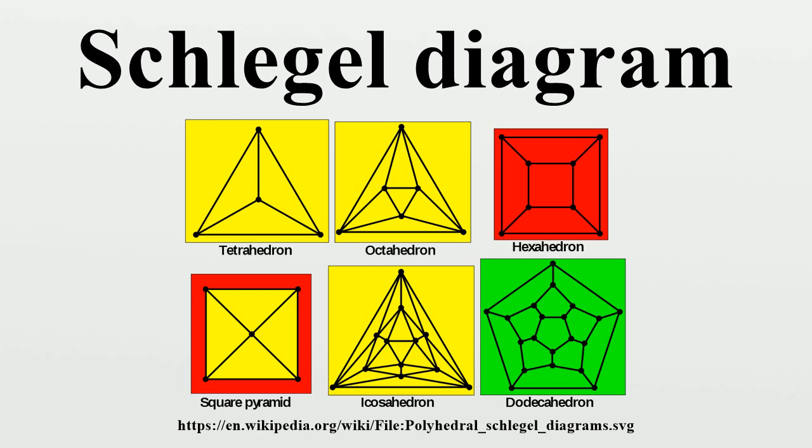It is sometimes convenient to project the polyhedron from a vertex. This vertex is projected to infinity and does not appear in the diagram. The edges through it are represented by lines drawn outwards.